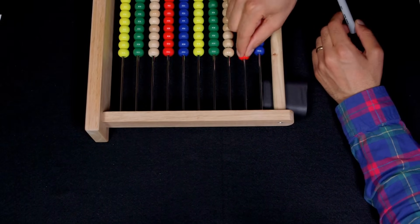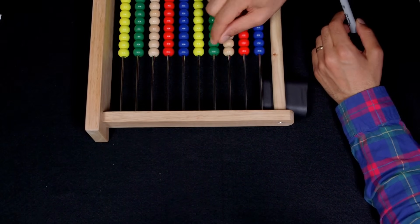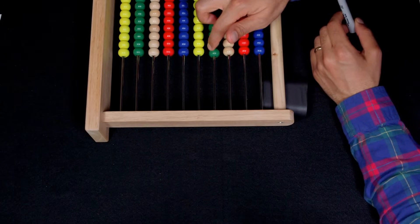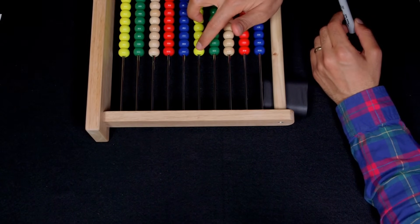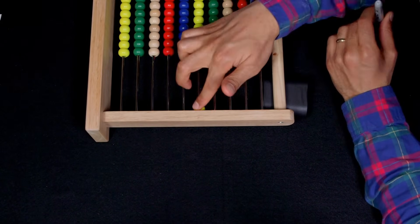So each of these is 1, each of these is 10, each of these is 100, each of these is 1,000. I don't have 15 of these, but these are 10,000. Each of these are 10,000. So this is one 10,000.